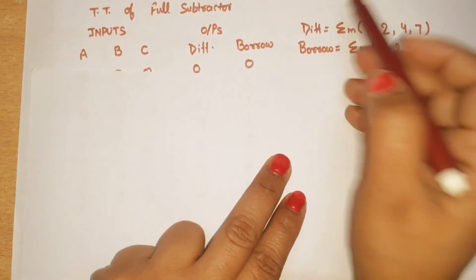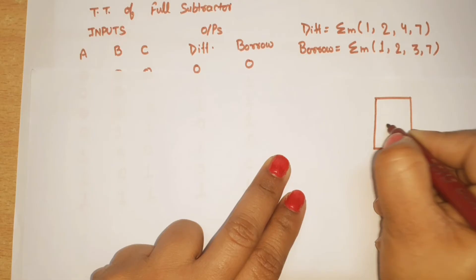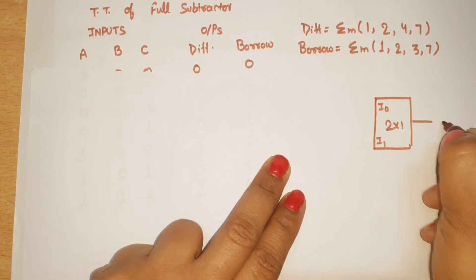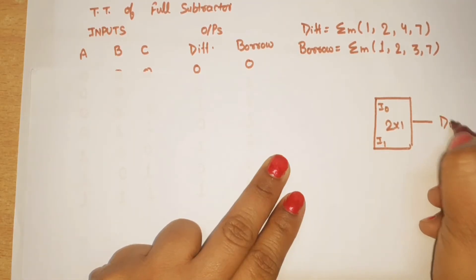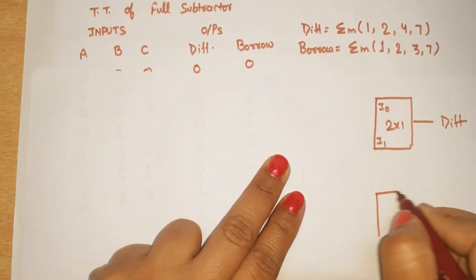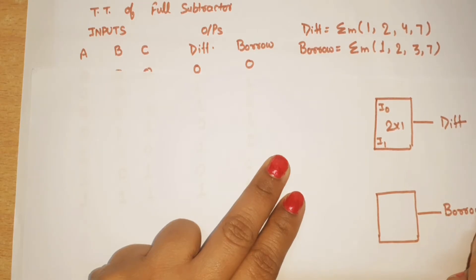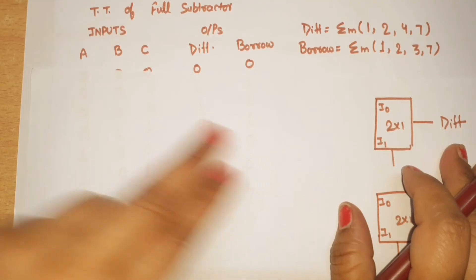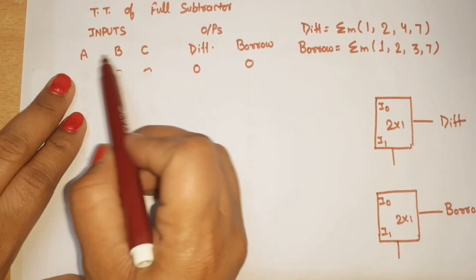Now for implementation, we will use 2-to-1 MUXes. In the general structure of a 2-to-1 MUX, we have input I0, second input I1, one output, and one selection line. Here we have two equations — difference and borrow — so we need two 2-to-1 MUXes: first for difference, second for borrow. We have A, B, C as three variables, so we will make an implementation table.